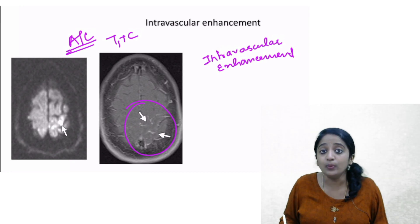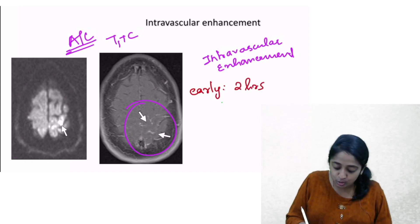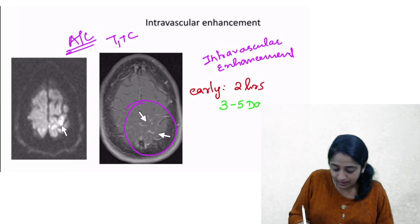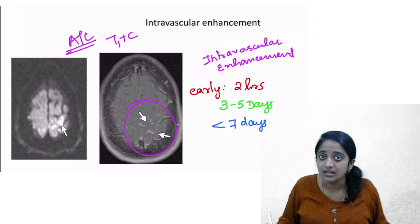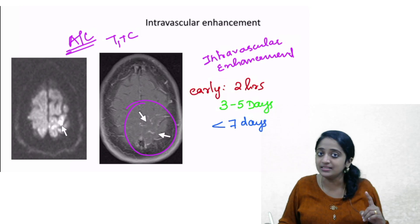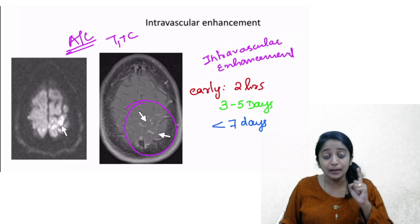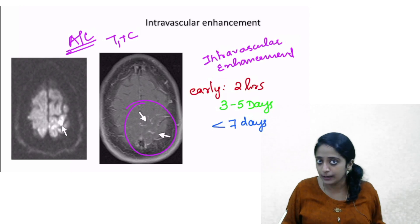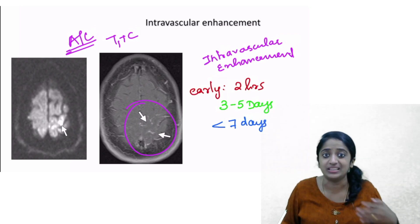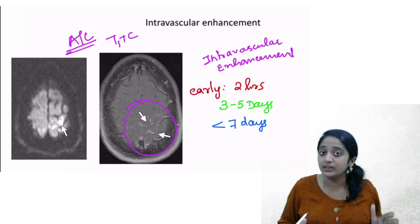When will you see intravascular enhancement? It can be seen as early as 2 hours, but it is usually seen between 3 to 5 days. It is never seen after 7 days, because after 1 week, the enhancement pattern changes to gyral/gyreform enhancement — as discussed in lecture 1 regarding CT enhancement. An important point: intravascular enhancement is not specific for acute infarct. You can get it in many other conditions, including inflammatory conditions, meningitis, and encephalitis. Always integrate images with the appropriate clinical context.